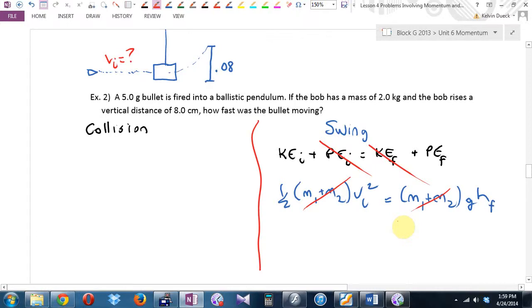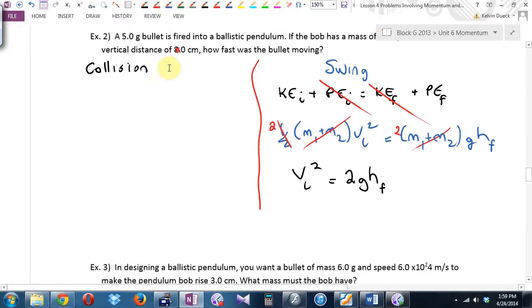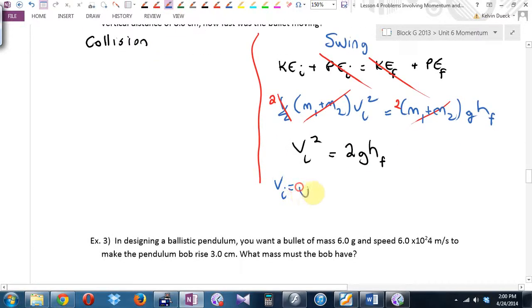In fact, I get this. A half M1 plus M2, mass of both, V_i squared, equals M1 plus M2, mass of both, g h_final. Look, look, look. Yay! It cancels. What do I want to find here right now? Yeah, I want to find V initial. Let's get the V initial by itself. I can either divide by a half or I can times by two. I'm going to choose to times by two. And I get V_i squared equals 2 g h_final.